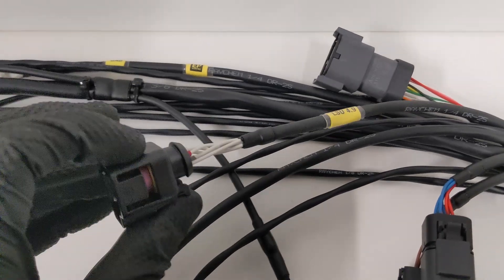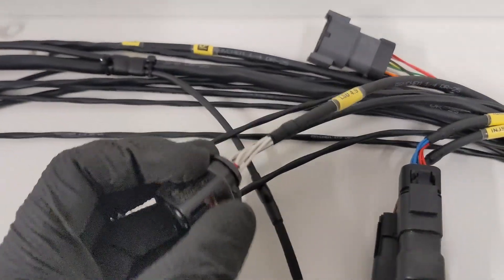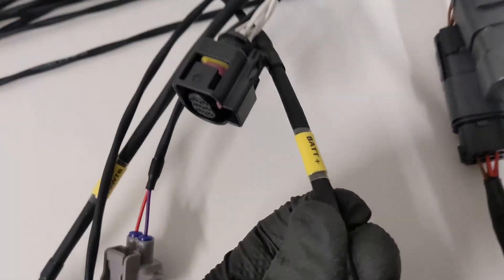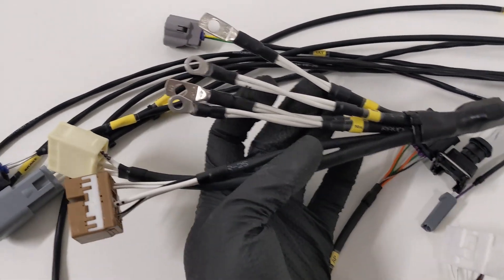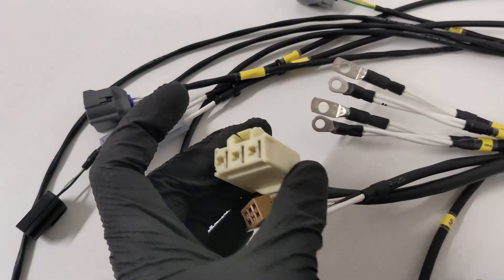We've got built-in wideband on this ECU, so we've got the LSU 4.9 connector here. We have battery positive wiring. In your fuse box on an EP82, you've got the midi fuses, so fuse box plugs as well.